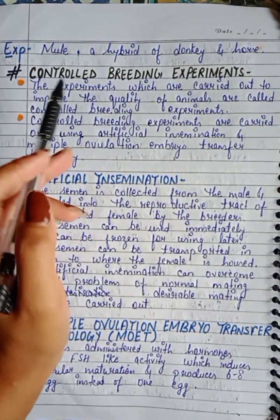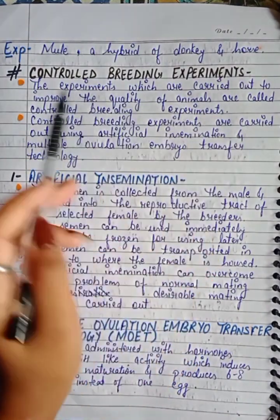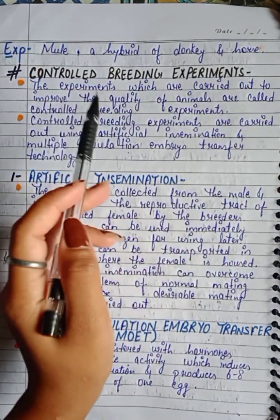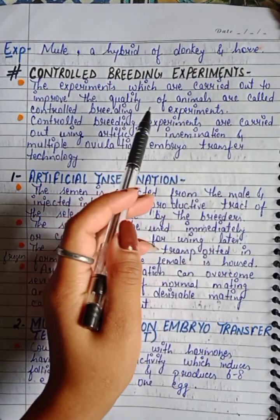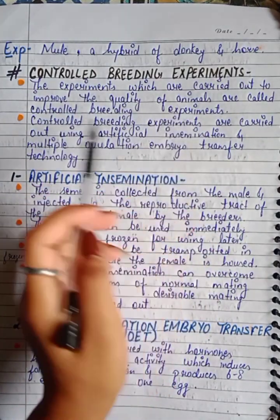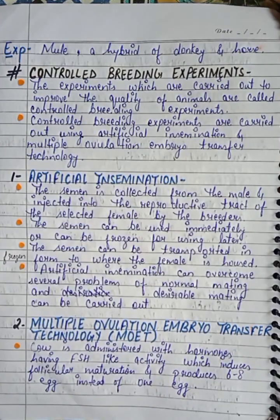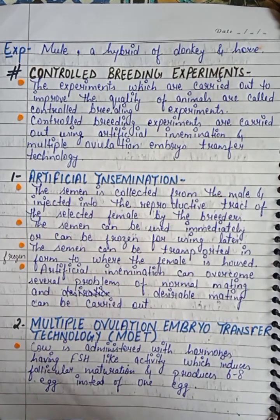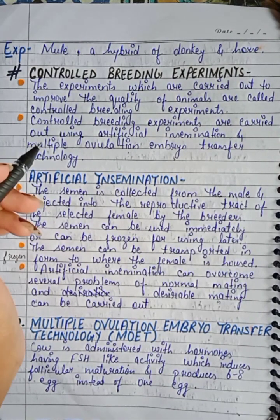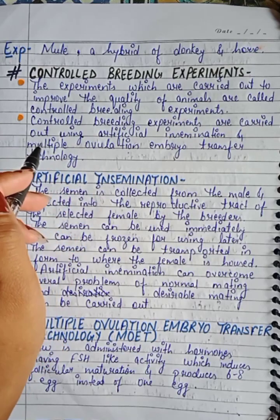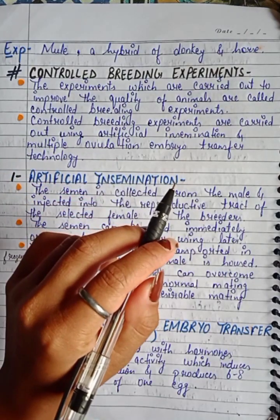Controlled breeding experiments: experiments carried out to improve the quality of animals are called controlled breeding experiments. Controlled breeding experiments are carried out using artificial insemination and multiple ovulation embryo transfer technology.